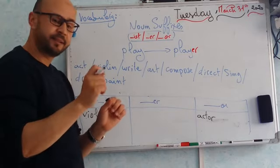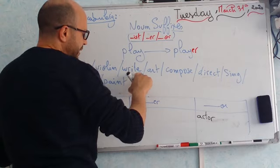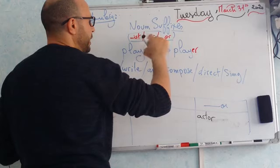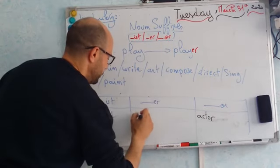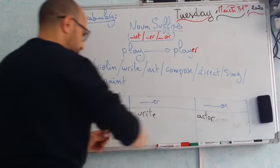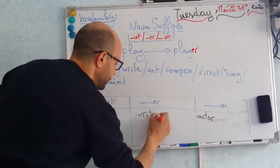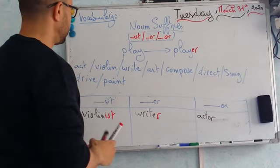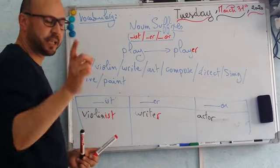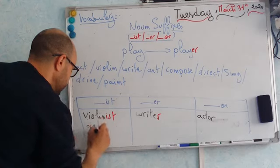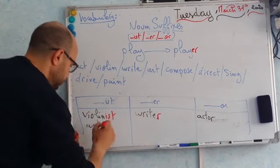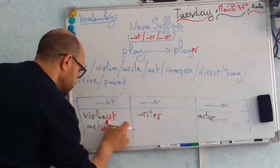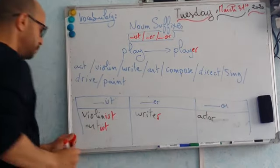Write. Good. Writer. Pay attention. We have E at the end. The vowel E at the end. So, we're going to add only R. Only the R. So, writer. Let's write them like this, so that we can see the change. Art. Excellent. An artist. Here. An artist.